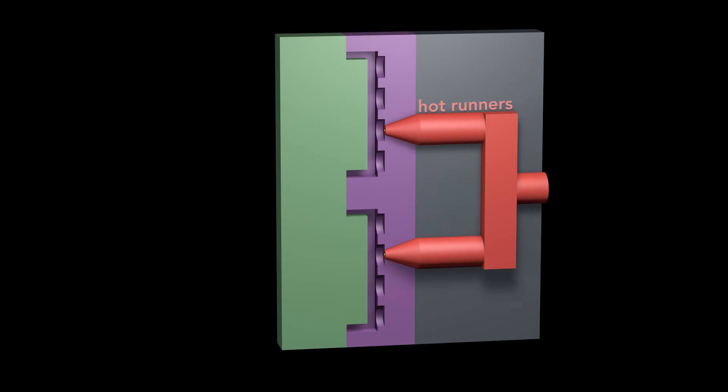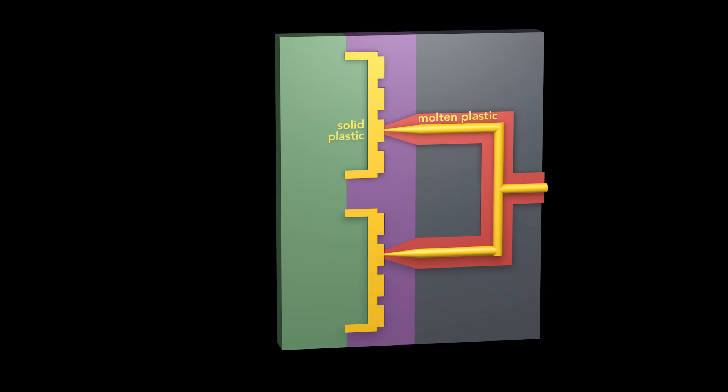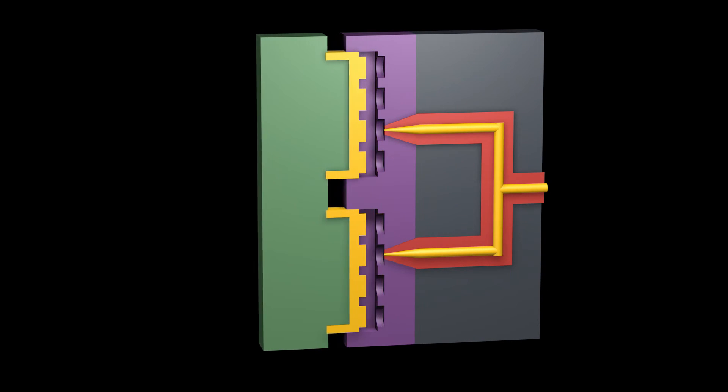Hot runners are a heated distribution network. This keeps plastic inside the runners molten, while the plastic in the mold solidifies. This leaves no gates or sprues to be removed. The molded bricks are ejected, ready to use. The downside is that this setup is more expensive than a traditional cold runner system.